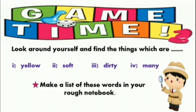Now it's game time! Look around yourself and find things which are yellow, soft, dirty, or many. Make a list of these in your rough notebook. Write the word 'yellow' and list all the yellow things around you; write 'soft' and list soft nouns; write 'dirty' and list nouns that are dirty; write 'many' and list nouns that are many around you. I hope adjectives are clear to you. I will see you next time, inshallah. Until then, Allah Hafiz!